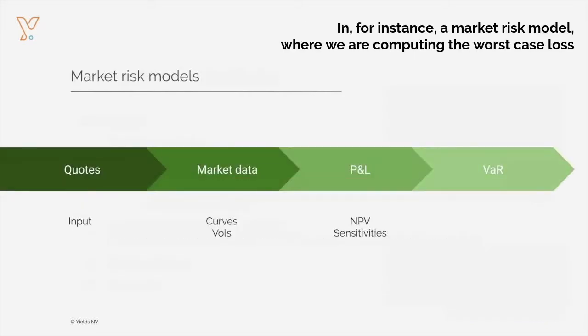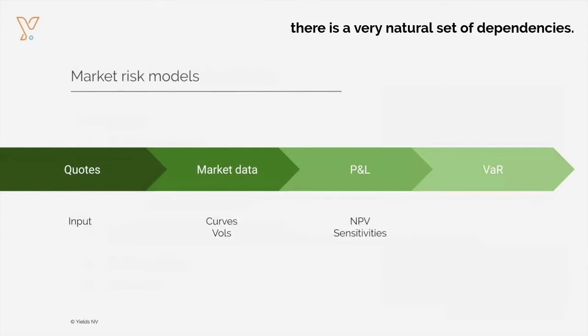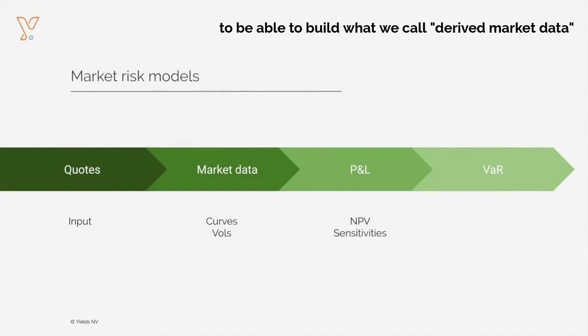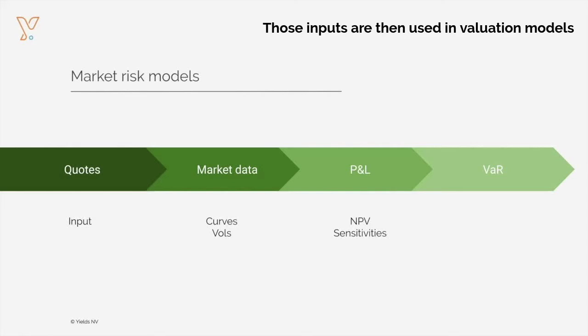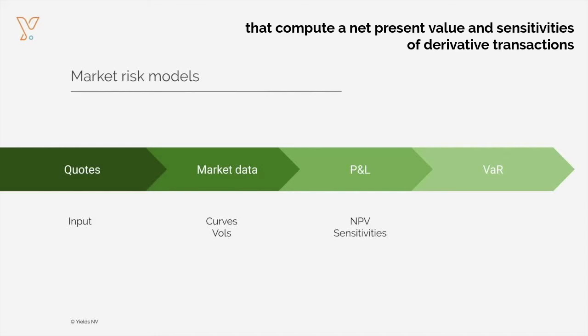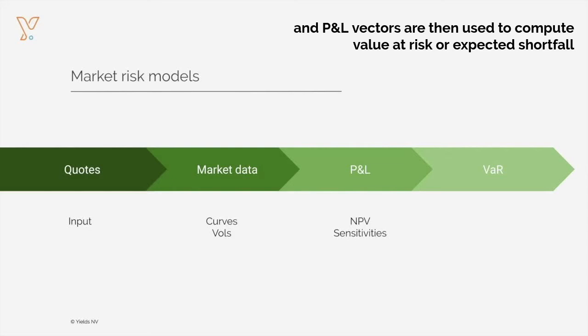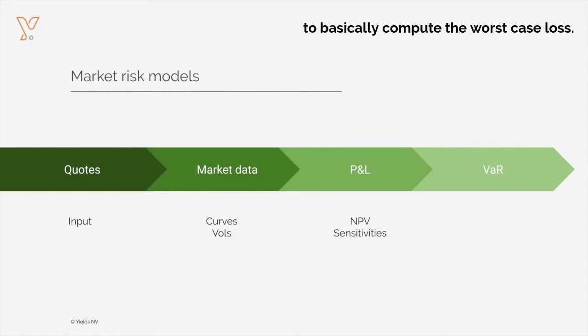For instance, in a market risk model where we are computing the worst case loss, there is a very natural set of dependencies. Typically, we start from market data quotes to build what we call derived market data, which includes, for instance, interest rate curves or volatility surfaces. Those inputs are then used in valuation models that compute the net present value and sensitivities of derivative transactions. And P&L vectors are then used to compute value at risk or expected shortfall, to basically compute the worst case loss.